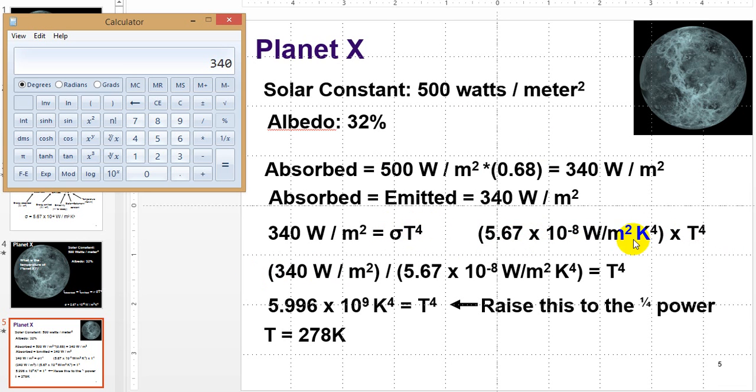What we need to do is isolate out T, because that's what we're ultimately trying to get at. What is the temperature of planet X? So we want to get T by itself. We're going to divide both sides by sigma. It just goes away on this side, but on the other side, it's going to be 340 divided by sigma will equal T to the 4. This is a number, 5.67 times 10 to the negative 8.